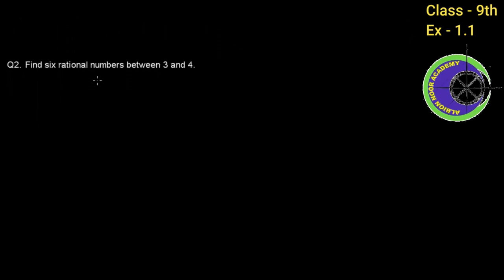Question number two: Find six rational numbers between 3 and 4. So we have to find six rational numbers between 3 and 4. Between any two numbers, we can write infinitely many rational numbers.